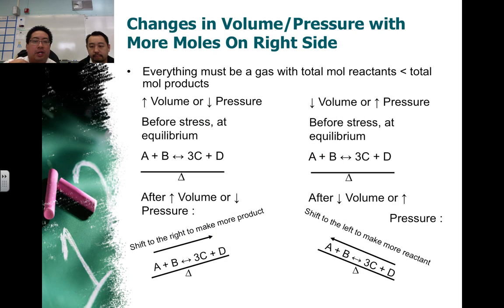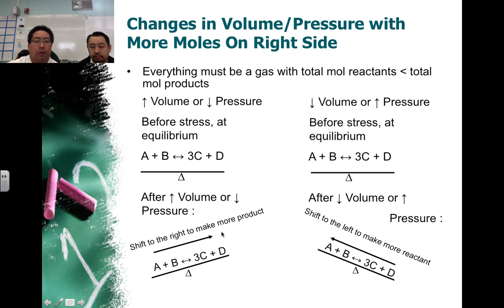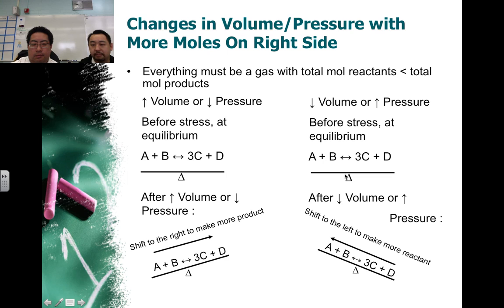Here's a situation where we change the volume or pressure where there are more moles on the right-hand side — four moles on the right and only two moles on the left. So, if I increase the volume or decrease the pressure, we end up with an imbalance, and it's going to favor the side with the greater total moles of gas. When you decrease the volume or increase the pressure, you're going to favor the side that takes up less space — that would be the left-hand side. The equilibrium will shift towards the left because it needs less space.